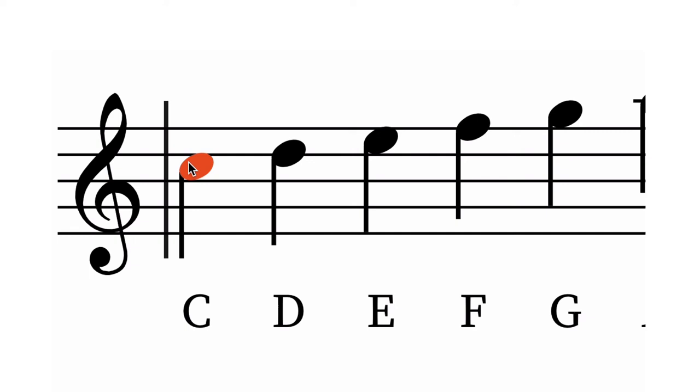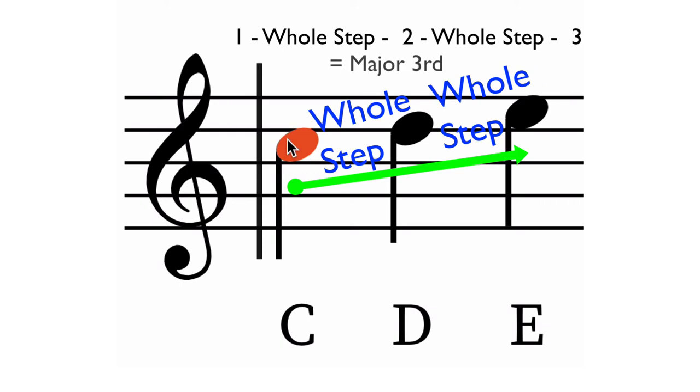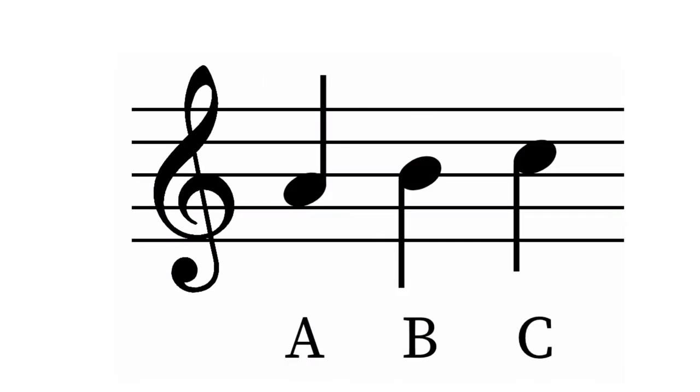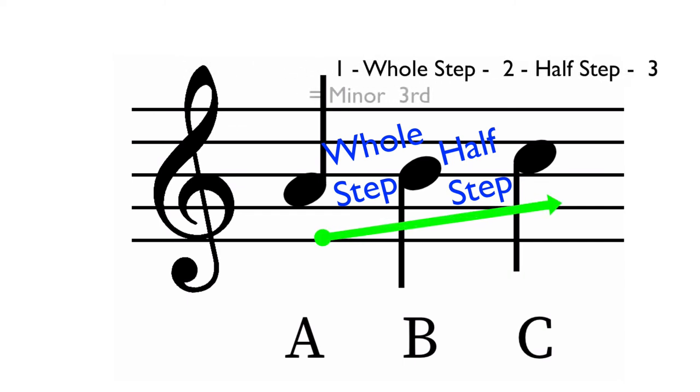Because it comes from the major scale, the major triad has a major third. E, the major third, is two whole steps or tones away from C. Meanwhile, because it comes from the minor scale, the minor triad has a minor third. C, the minor third, is only a whole step plus a half step away from A. This is how the major scales and minor scales achieve their distinctive sound.